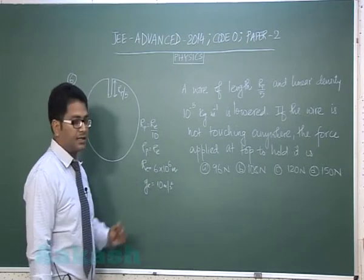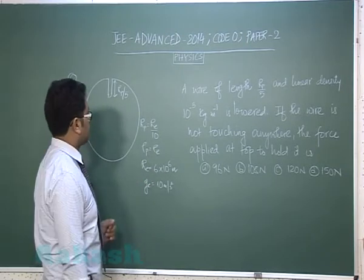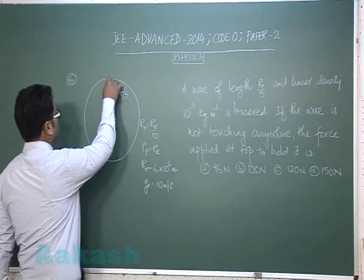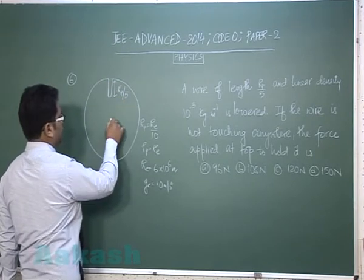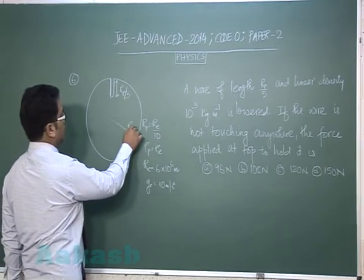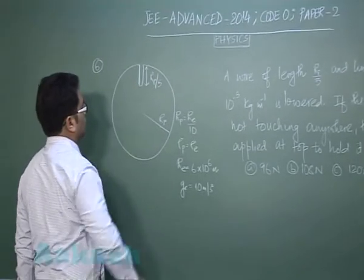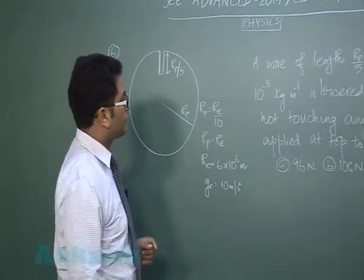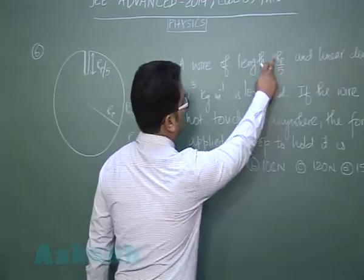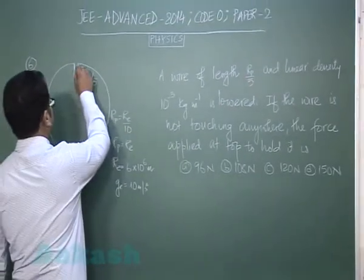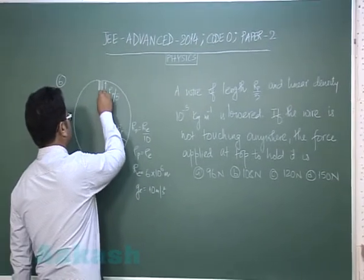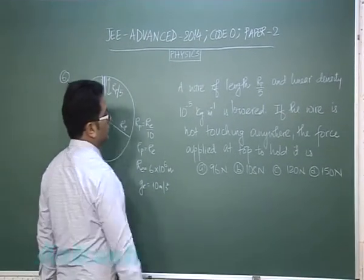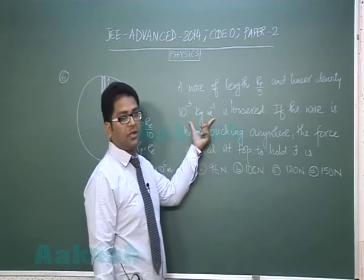Radius of earth is given, g at the surface is given. In this particular planet a tunnel of depth one-fifth its radius is dug and now wire of length rp by 5 exactly of the same length and linear density lambda is lowered.